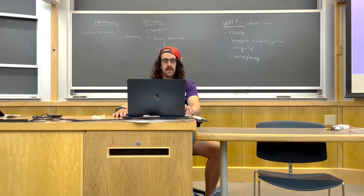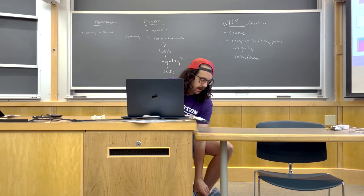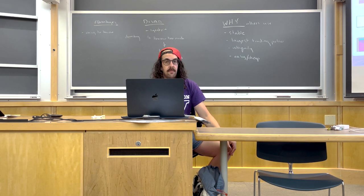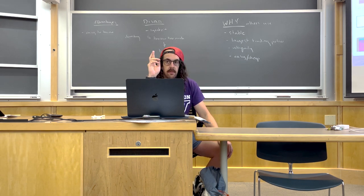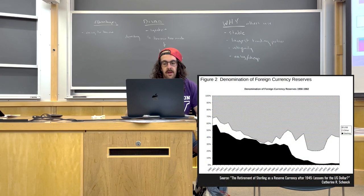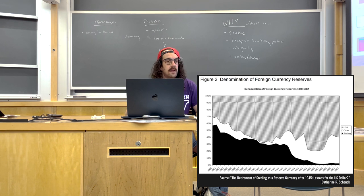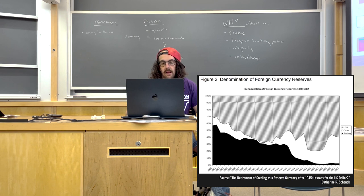Evidence about the dollar as a global reserve currency could be uniqueness or links for any hegemony argument — reserve currencies and hegemony are inextricably intertwined. A graph shows the dollar taking over from pound sterling, totally dominant in the 70s. Now the dollar is at a lower percentage of foreign currency reserves — we are starting to lose preeminence. The sterling graph shows gradual gradual decline and then a total drop-off.